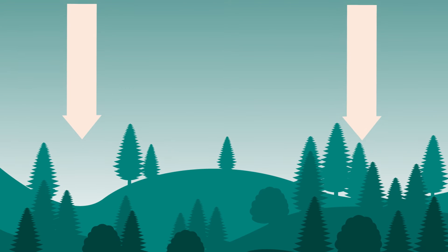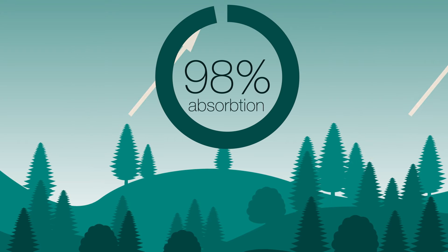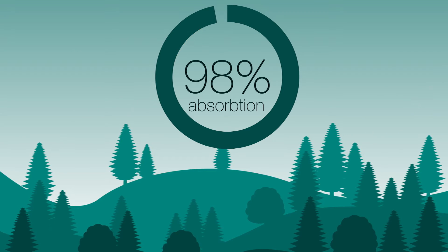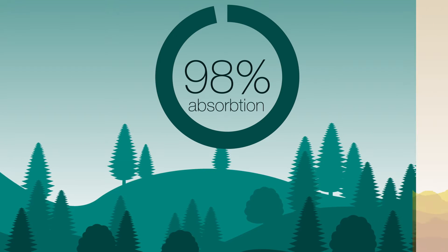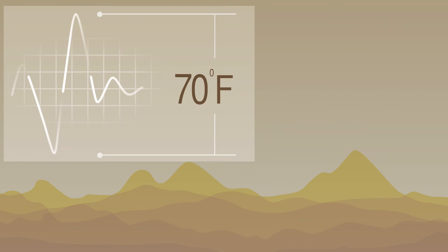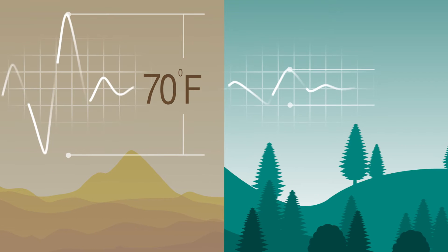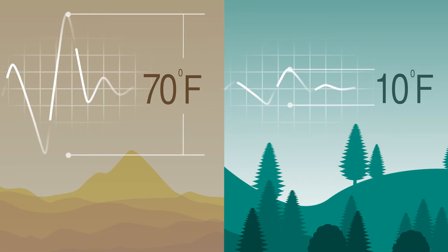Dark surfaces, including forests and asphalt, absorb the radiation and hold onto it as heat. That's why deserts like the Sahara in Africa can fluctuate by as much as 70 degrees Fahrenheit from day to night, while parts of the Amazon basin in South America fluctuate by less than 10 degrees Fahrenheit.